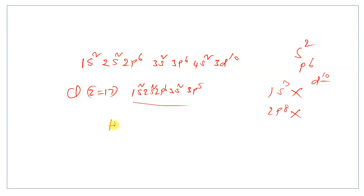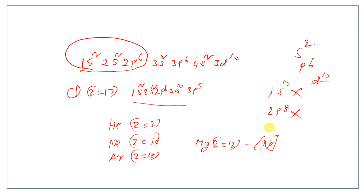You can write suppose helium, neon, argon. Neon atomic number is 10, argon is 18. Suppose magnesium, atomic number is 12. Then you can write neon in bracket, because neon is 10, so what's remaining? Next, after neon, 3s2. Okay friends, thank you.